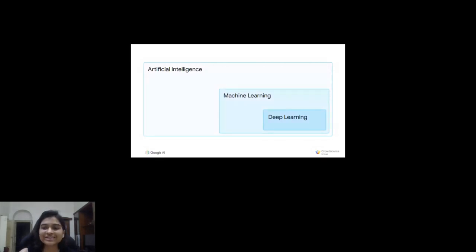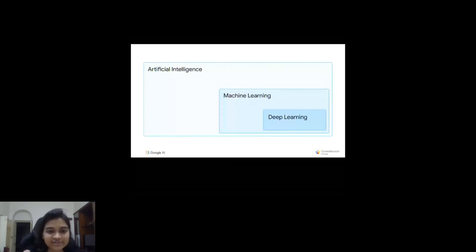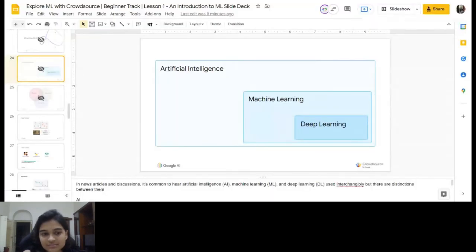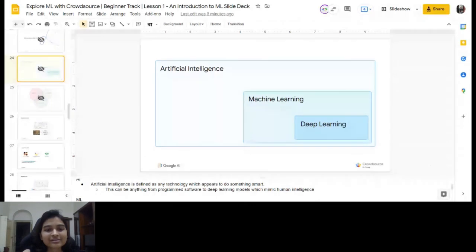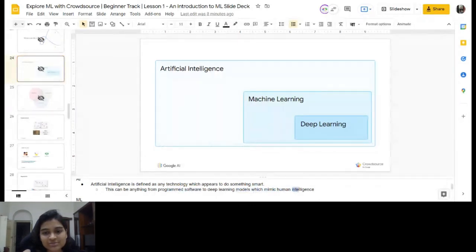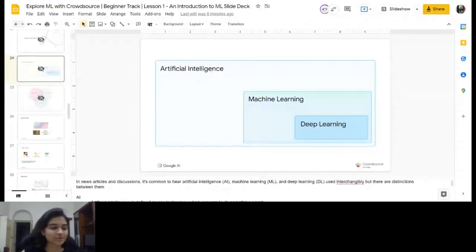Any example of AI? Looking at the speaker notes: anything from program software to deep learning models which mimic human intelligence — classical rule-based programs also fall under AI. For example, I made a Sudoku solver which does not use backtracking — that would be an example of an AI system that isn't necessarily machine learning.